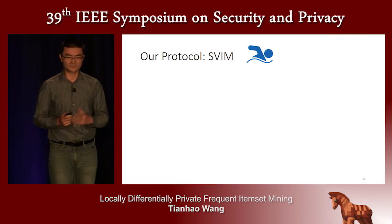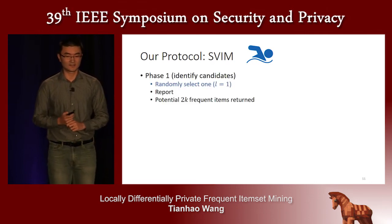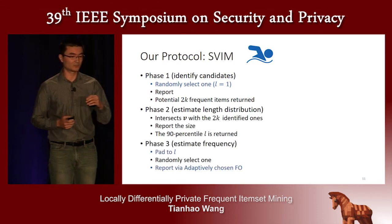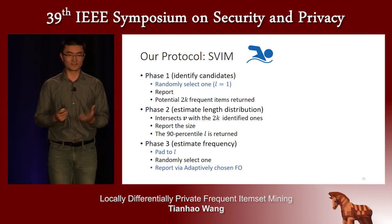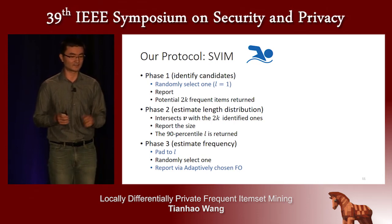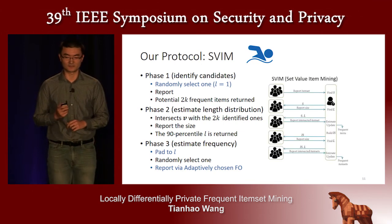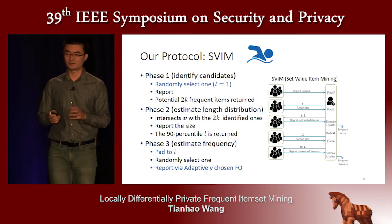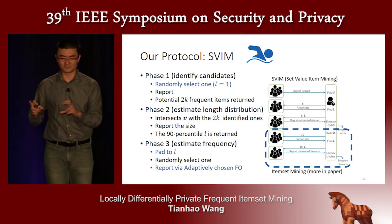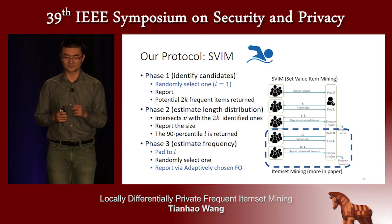Our protocol is called SVIM — for Set-Valued Item Mining. It looks somewhat similar to LDP Miner but has key differences. In the first phase, each user samples one value without any padding. In the second phase, we find the 90th percentile of the new intersections. In the third phase, each user pads to L (the 90th percentile) and reports with the adaptively chosen frequency oracle. There are two additional steps at the bottom for itemset mining, which due to time constraints I will not cover here but are in the paper.